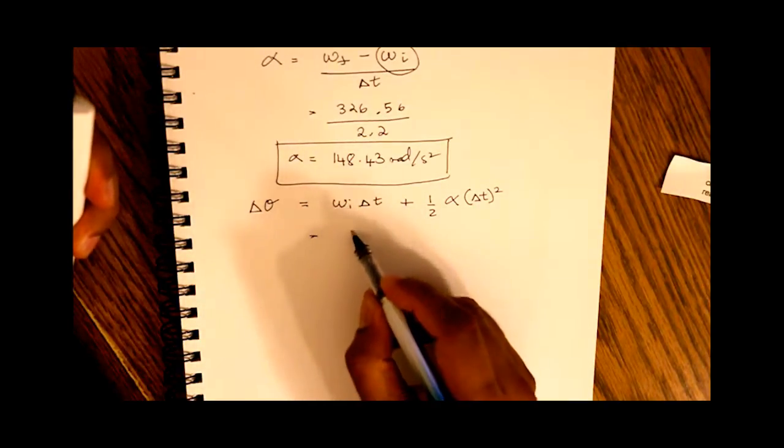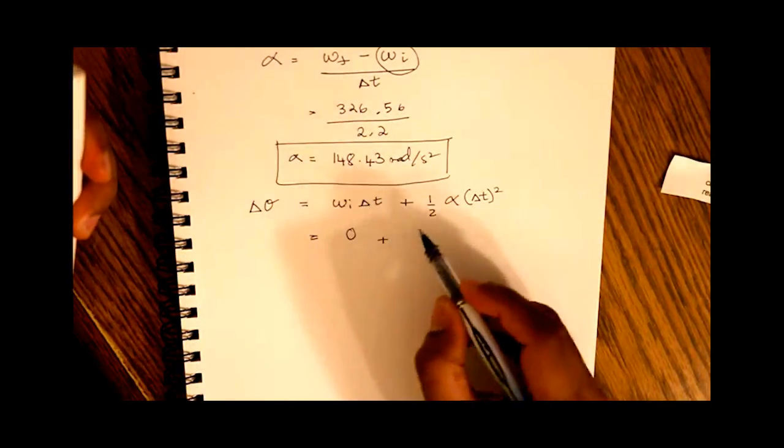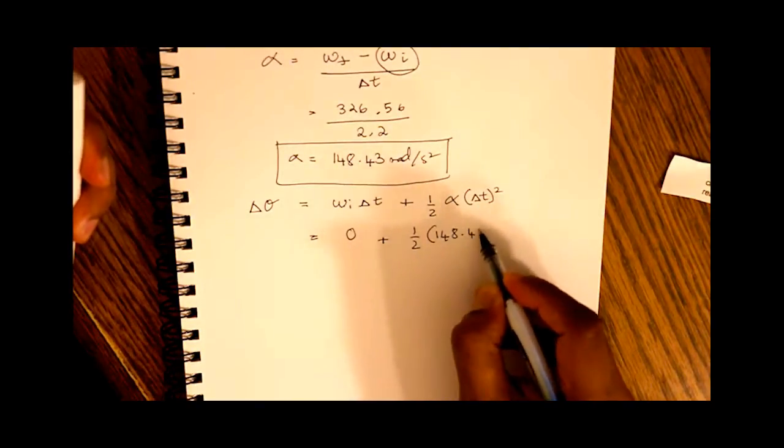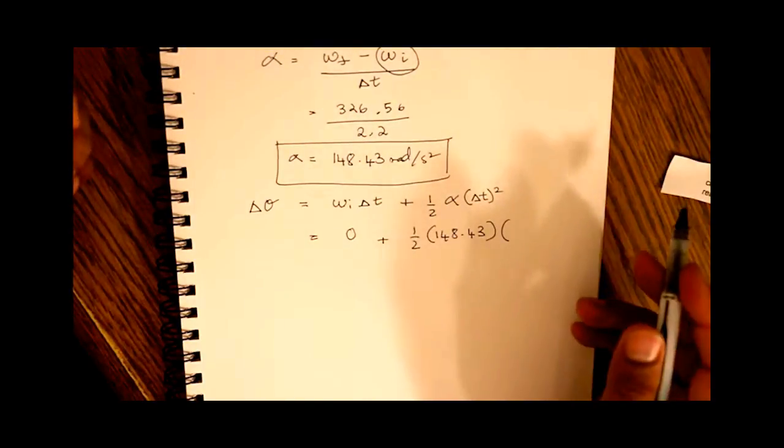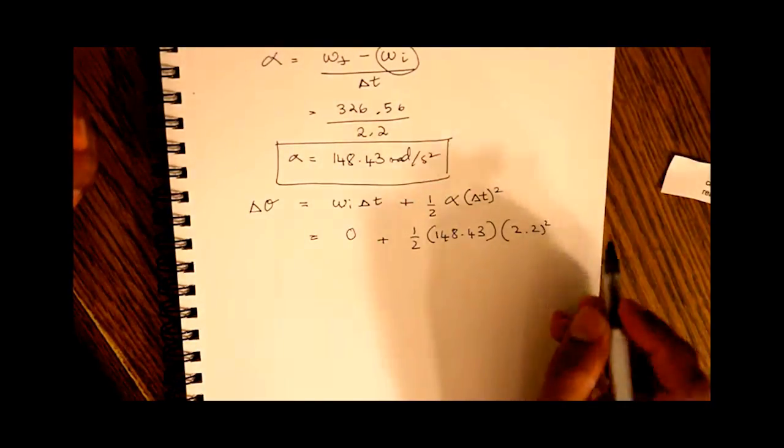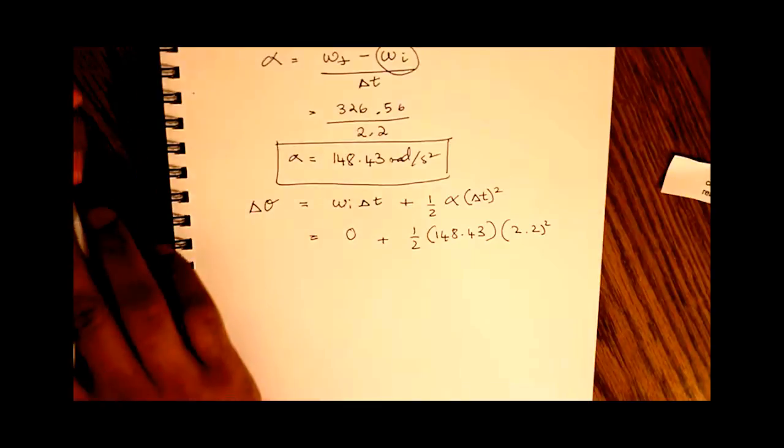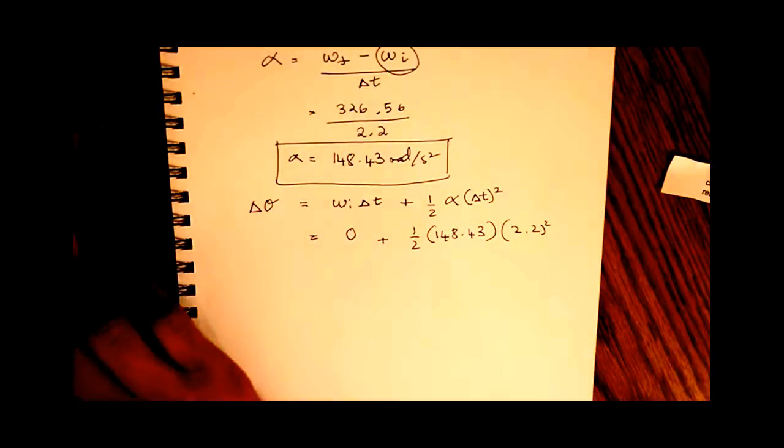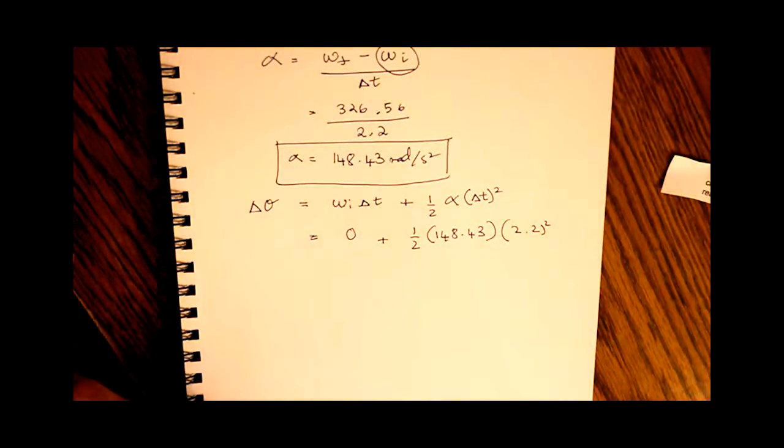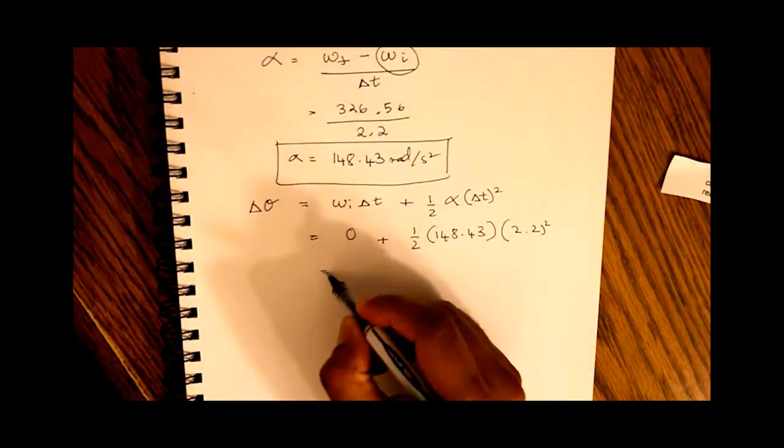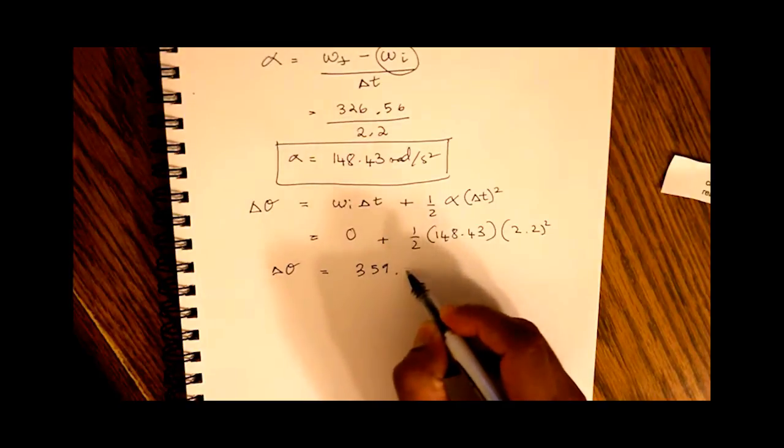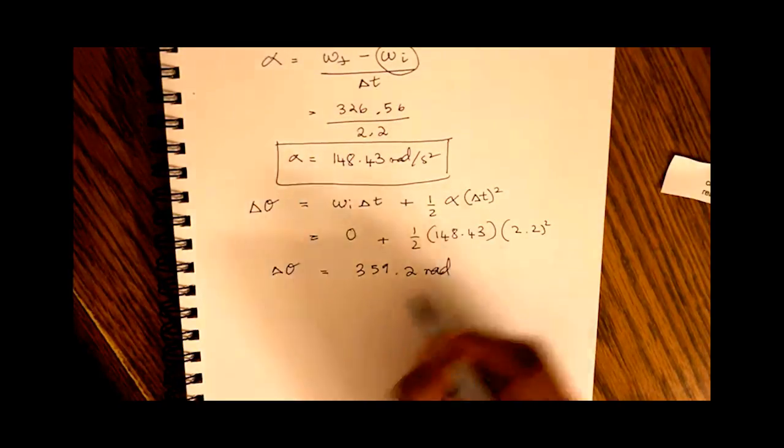So this is what we want to find out. We know our initial velocity is zero, so this is zero, started from rest, plus half. We just found out our angular acceleration as 148.43 radians per second and our change in time is 2.2 squared. What does that give us? 148.43 times 2.2 times 2.2 divided by 2. This gives us a change in delta of 359.2 radians.